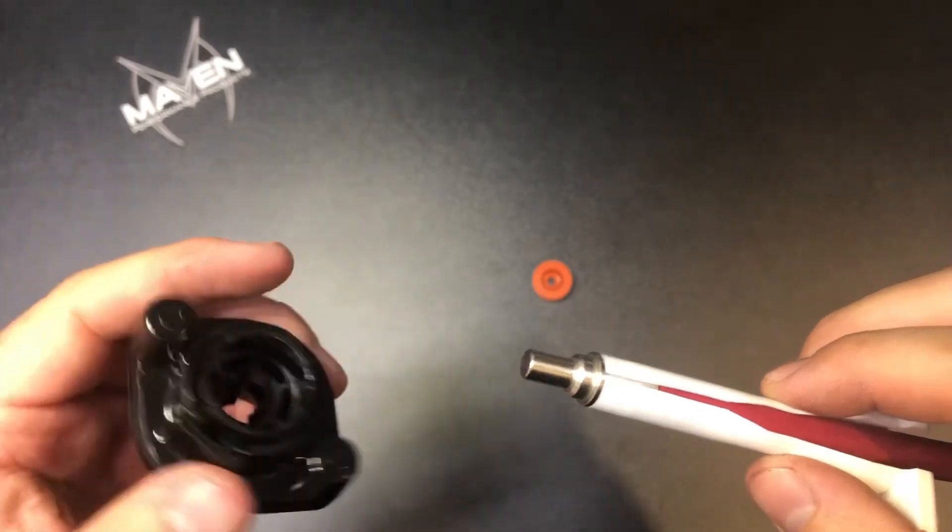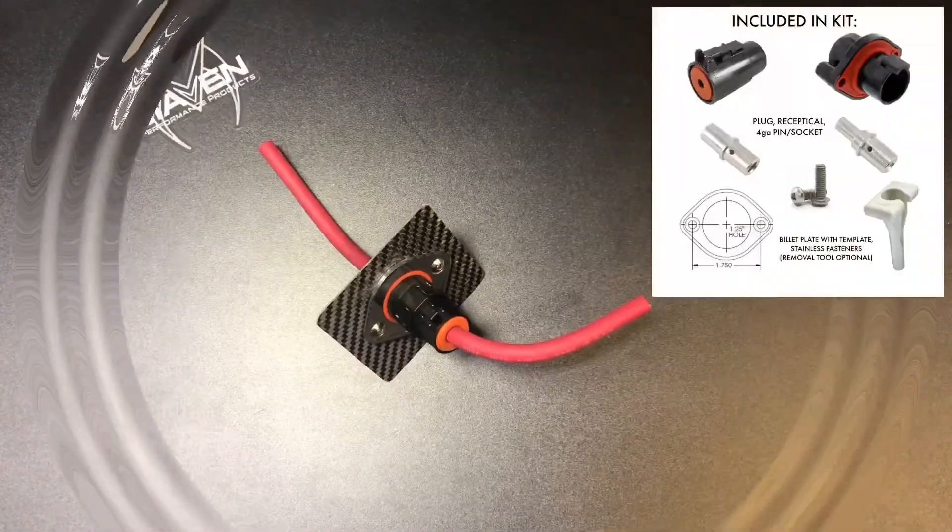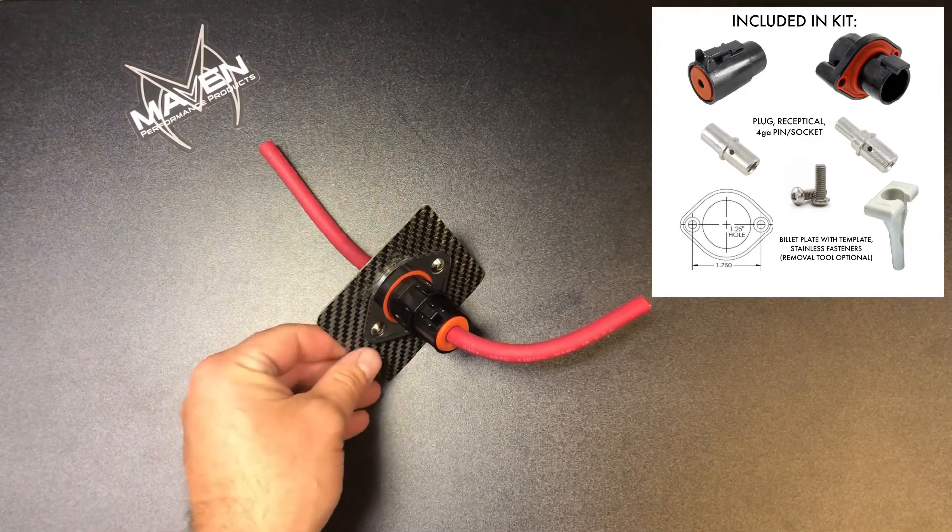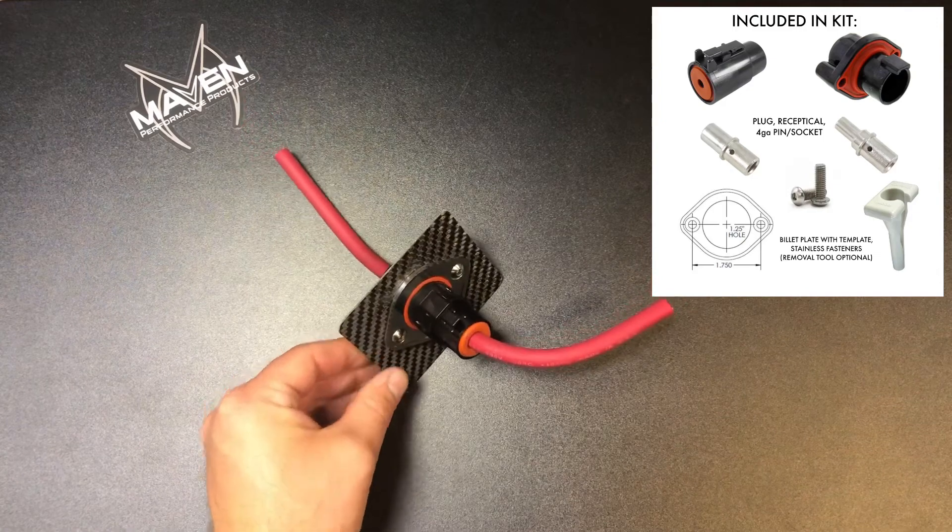And of course, if you want to put it back together, just slide this off and put it back in. Not much to it. Just a quick video on how to pass four gauge wire through your firewall in a way that it can actually be removed quite quickly.